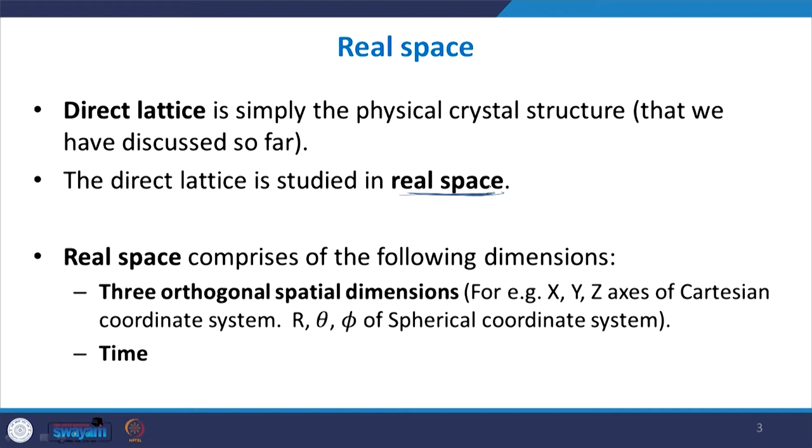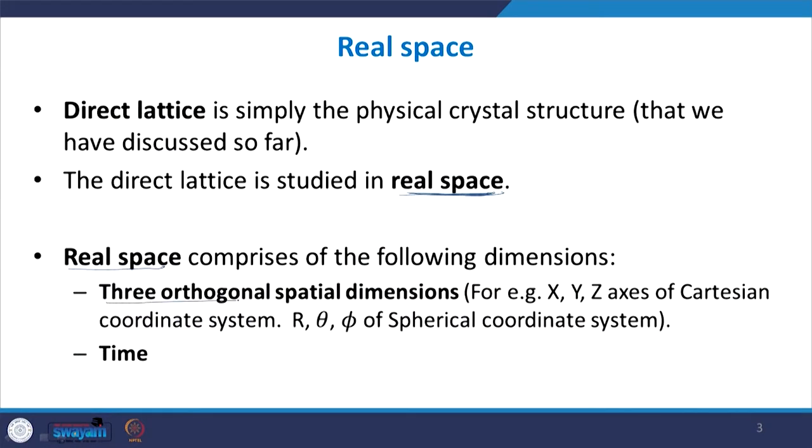What is meant by a real space? A real space consists of three orthogonal spatial dimensions. If you choose a Cartesian coordinate system, you will have three independent spatial dimensions: the x-axis, the y-axis and the z-axis - all mutually perpendicular and independent. Similarly, if you choose a spherical coordinate system, any point can be represented by three independent coordinates: r, theta and phi.